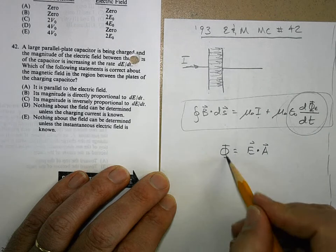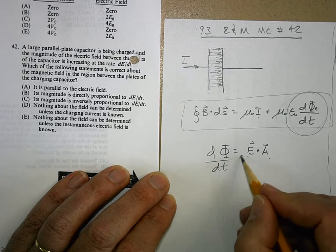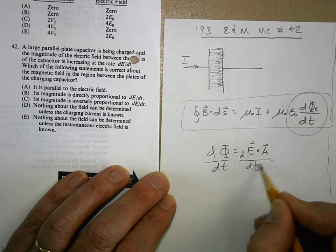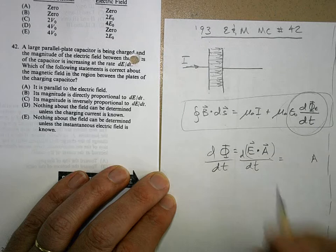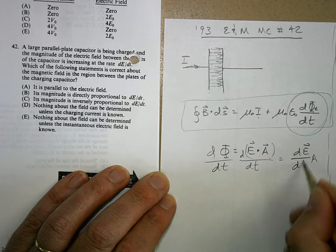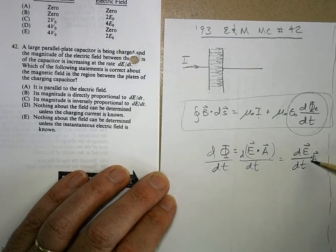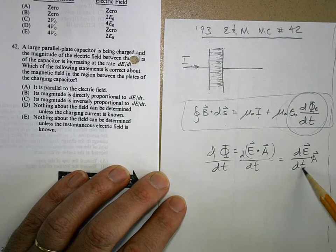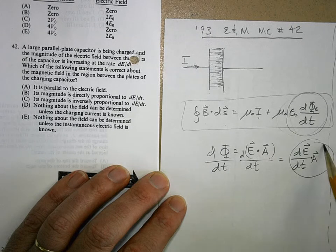Now A is staying constant here, so if you take the time derivative of this, the area is going to stay constant. Let's put it out there, and this is dE/dt.